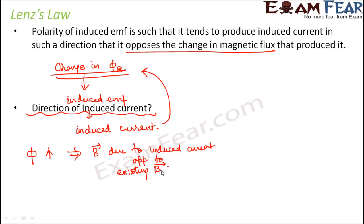This is the key. Whenever the magnetic flux is increasing — and there are two possibilities: flux increasing or decreasing with time — in the case where magnetic flux is increasing, the magnetic field due to the induced current is opposite to the existing magnetic field. That is how you get the direction of the magnetic field due to the induced current.